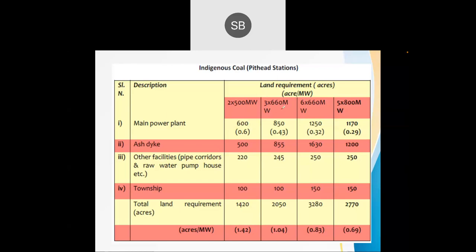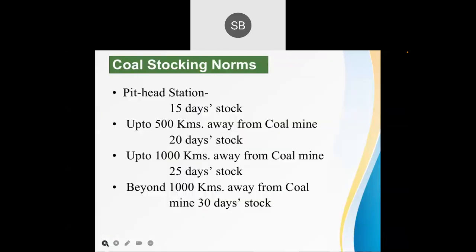In many cases, this land may not be available near coal mines or near the load. We have to first find where land is available and then construct the power plant there. As the capacity of the power plant increases, the total land requirement also increases, depending on which subsystems are installed.